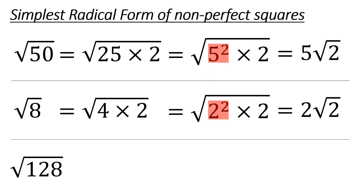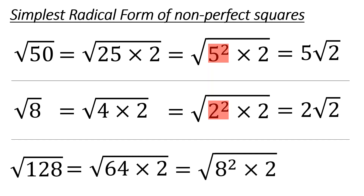Square root of 128: you can think of it as 64 times 2. Since 64 is a perfect square, you can think of that as 8 squared, and the square root of 8 squared is 8, so that goes out front. All of these had a square root of 2 left over that wasn't able to be worked out. It's not always going to be 2 — there are other situations. Let's do a few more examples.